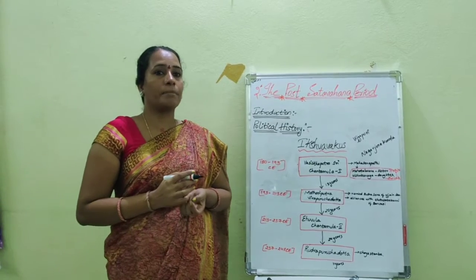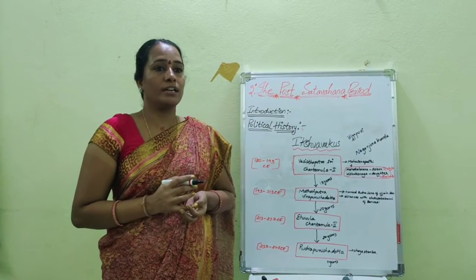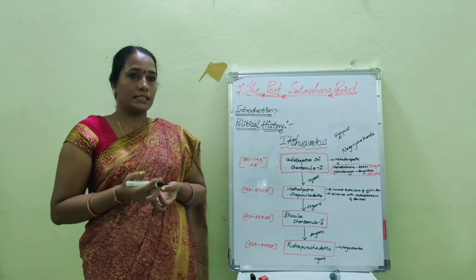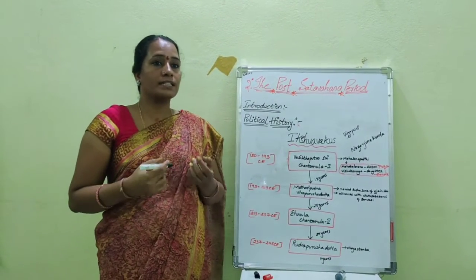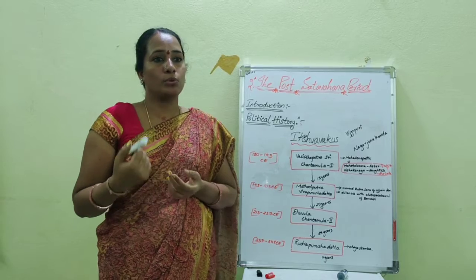After his death, his brother succeeded in 248 CE. According to Puranas, he was succeeded by three more rulers.